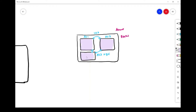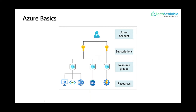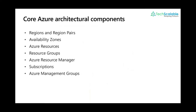That summarizes the basics from our previous session. The core architectural components include: Azure accounts, subscriptions, resource groups, resources, regions, region pairs, availability zones, Azure Resource Manager, and management groups. Now let me give a couple of insights into region pairs. Microsoft actually combines multiple regions together — for example, East US is paired with West US.